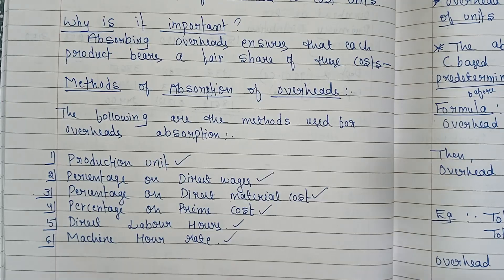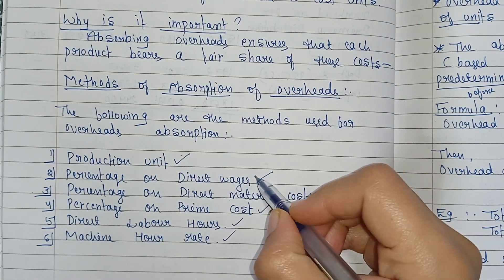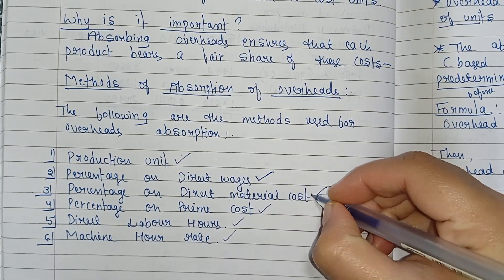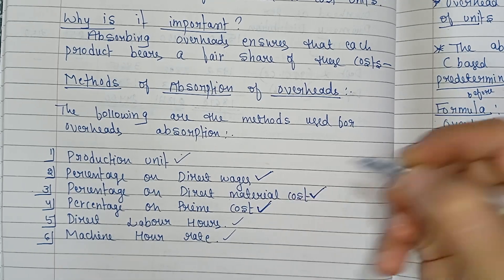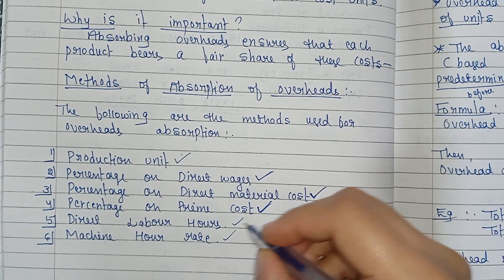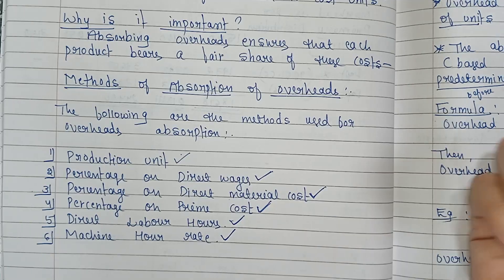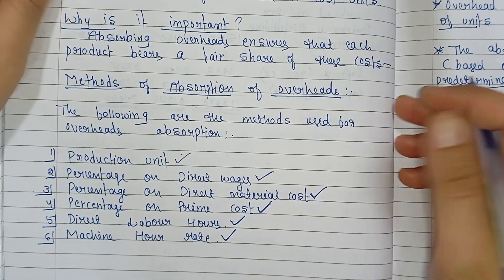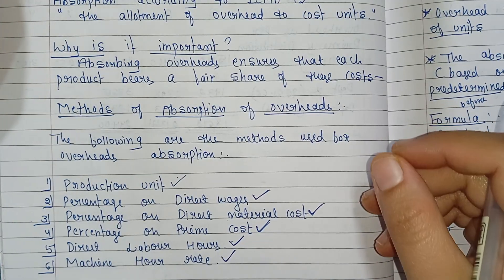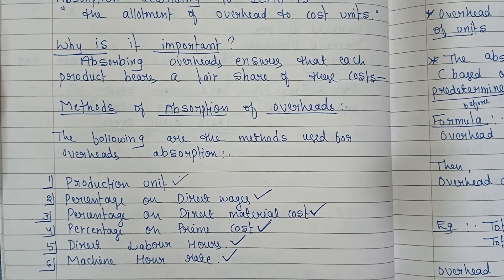So here we have finished absorption of overheads. There are mainly six methods: production unit, percentage on direct wages, percentage on direct material cost, percentage on prime cost, direct labor hours, and machine hour rate. I hope this concept is clear to you all. If not, please leave a comment. Thank you.